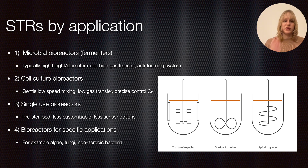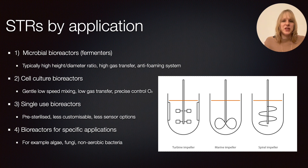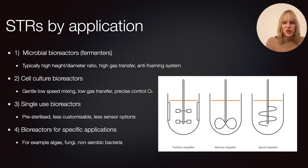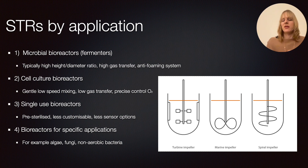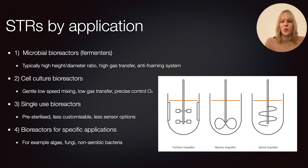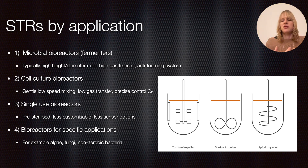There's also the option of single-use bioreactors. These are pre-sterilized, which avoids contamination, and they are quite flexible — if you want to make different products you can rapidly switch between them. However, they are less customizable for very specific requirements, and there are fewer sensor options available, making it harder to monitor your system. Generally, single-use systems are used on a much smaller scale.